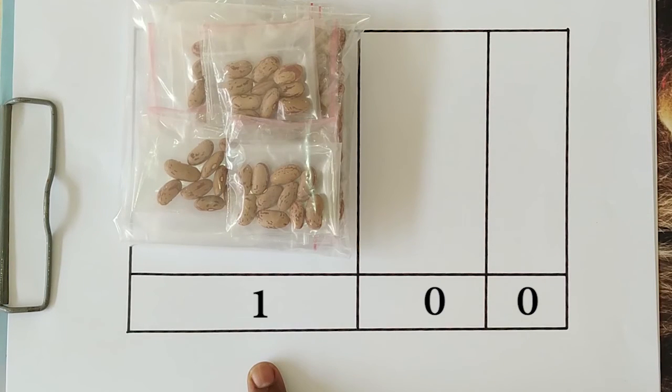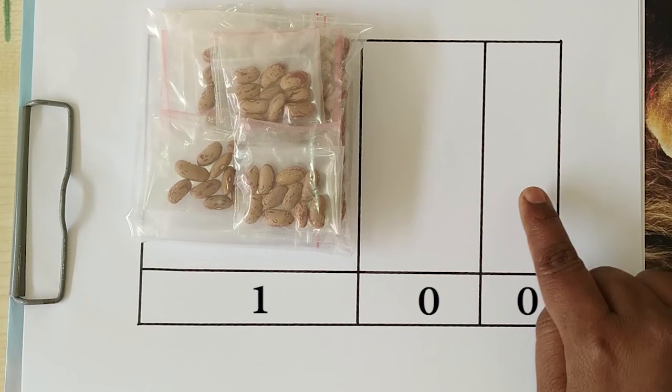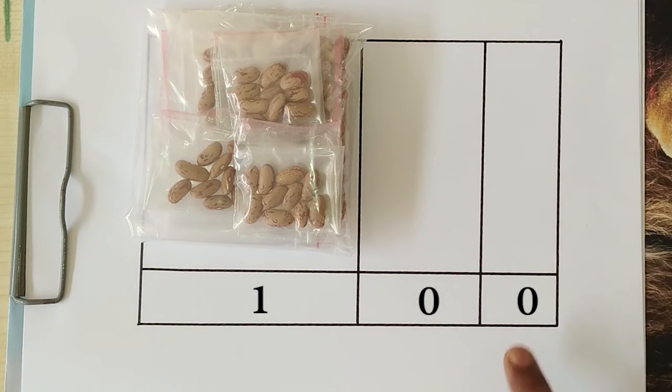How many big bags are there? One bag is there. So, we put a 1 below that. Now, in the middle column, we have no small bags. So, we put a 0. On the rightmost column, we have no independent beans. So, we put a 0 below. That is how we get 100, that is 100.